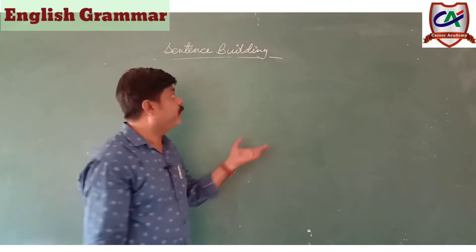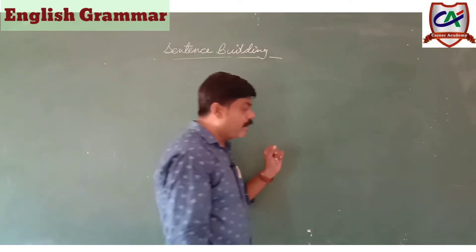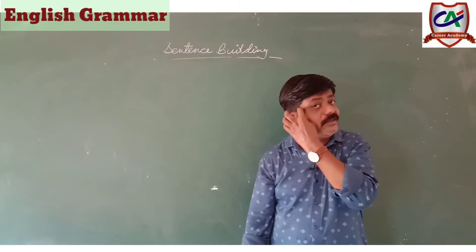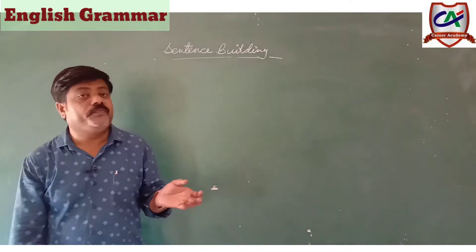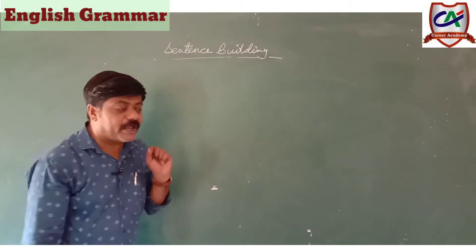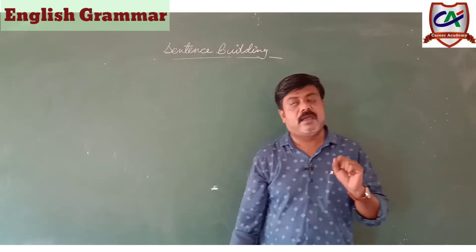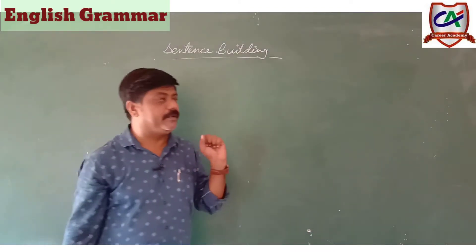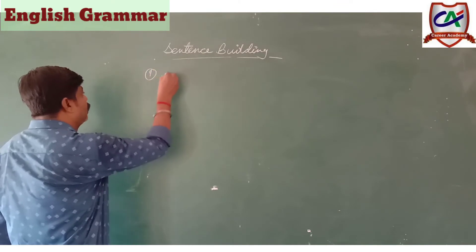In this topic we will learn how to make a sentence in the English language — English language में हम किस प्रकार से sentence को build up करें। First of all, I tell you there are four types of sentences in English language. Tense के according चार प्रकार के sentence build up किये जाते हैं। First is Affirmative sentence.